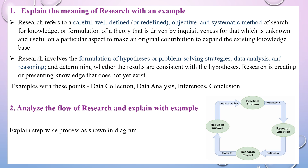Moving to the next question: analyze the flow of research and explain with an example. You can put it in the form of a diagram with four steps. First, a practical problem motivates you to research something. That leads to a research question, which defines a particular project or problem statement, and that leads to a result. The result helps in solving the practical problem — it is a loop. This is the complete flow of research.